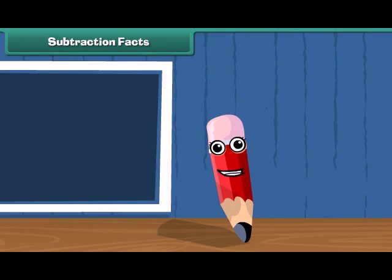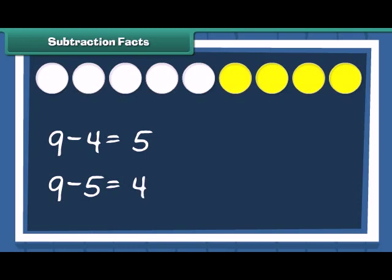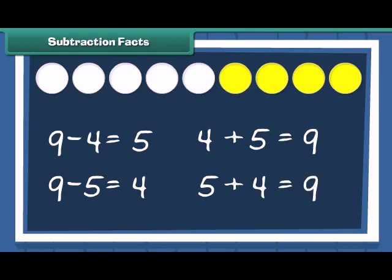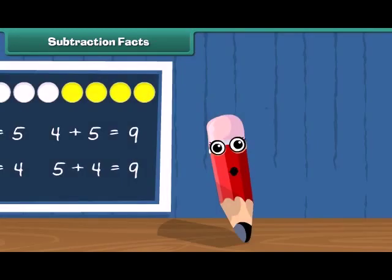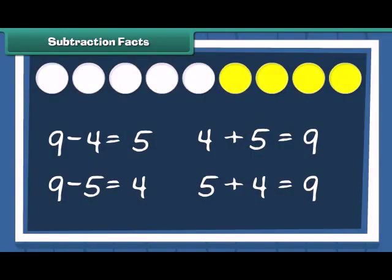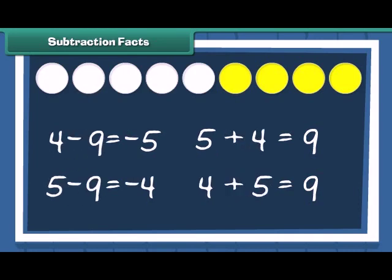Let me tell you about subtraction fact. We have 9 circles. Out of these, if 4 circles are colored, how many white circles are left? Thus, we have 9 minus 4, which is equal to 5, and 9 minus 5, which is equal to 4. Remember the addition fact we looked at a while ago? 4 plus 5 is equal to 9 and 5 plus 4 is equal to 9. Well, for every addition fact, there is a corresponding subtraction fact too. This shows that 3 numbers can be interchanged in addition or subtraction.